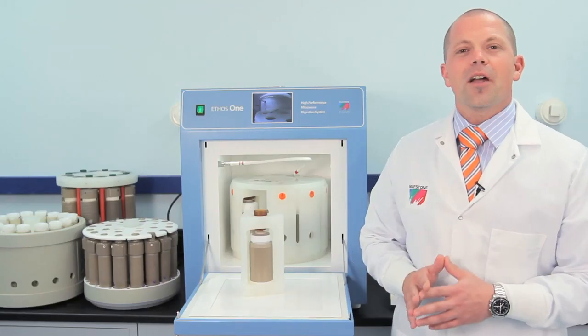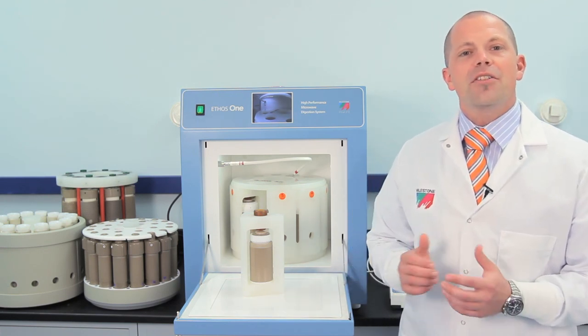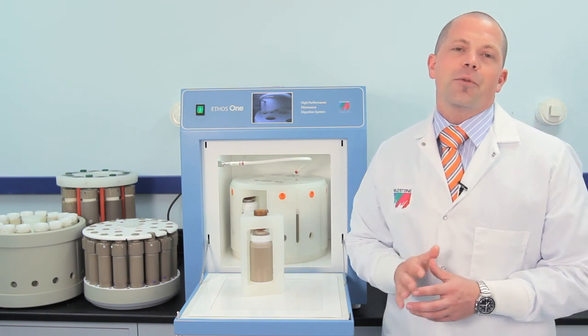The Ethos 1 comes standard with a thermocouple direct temperature probe which is the most accurate way to monitor temperature and ensure digestion runs are performed safely. Other options such as IR, pressure control, and pressure sensors are also available.